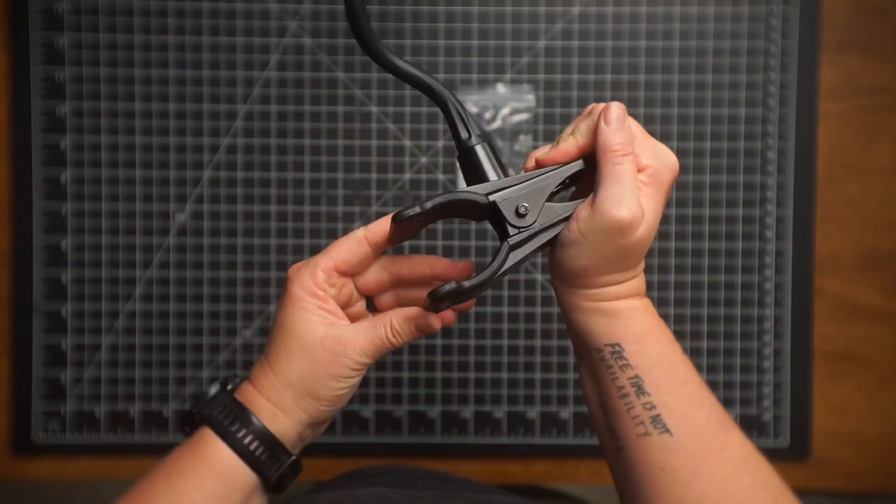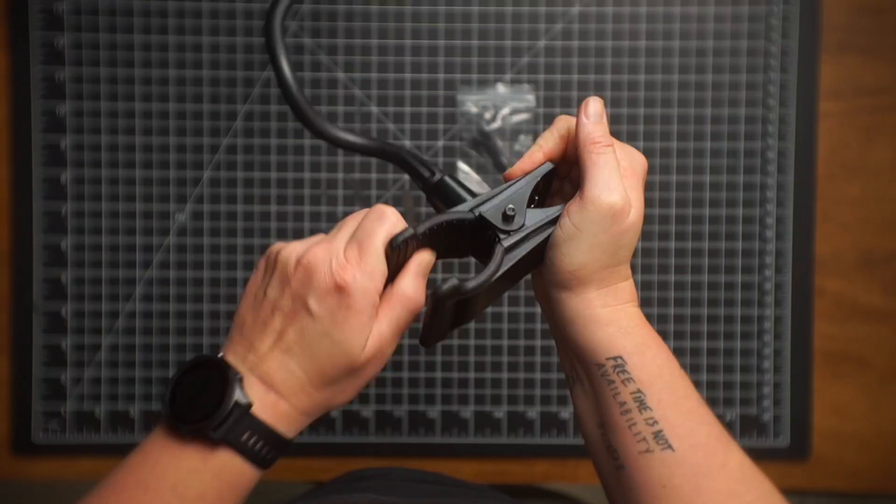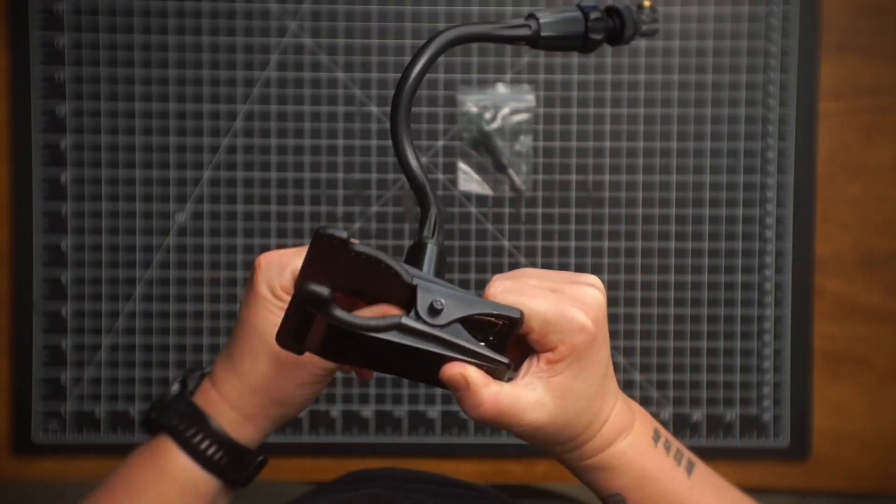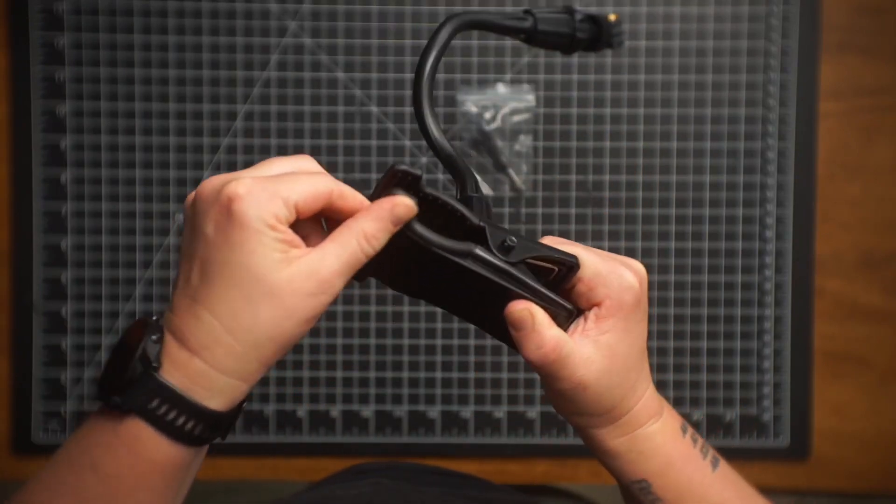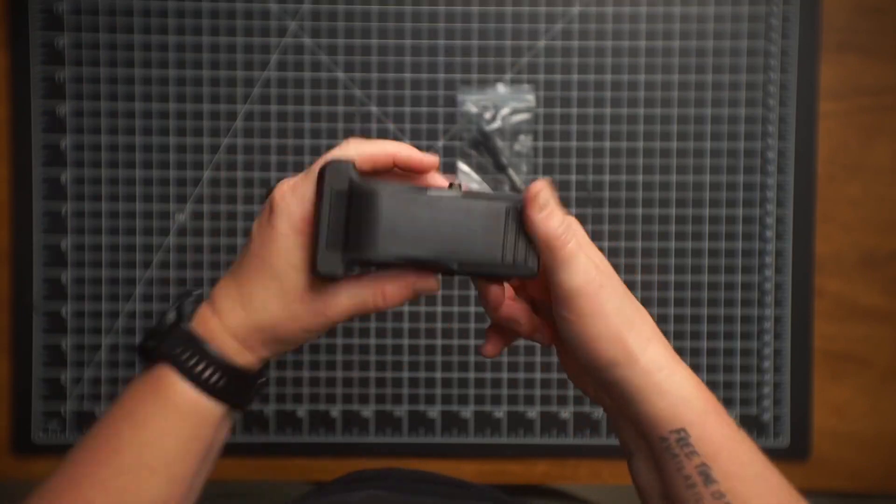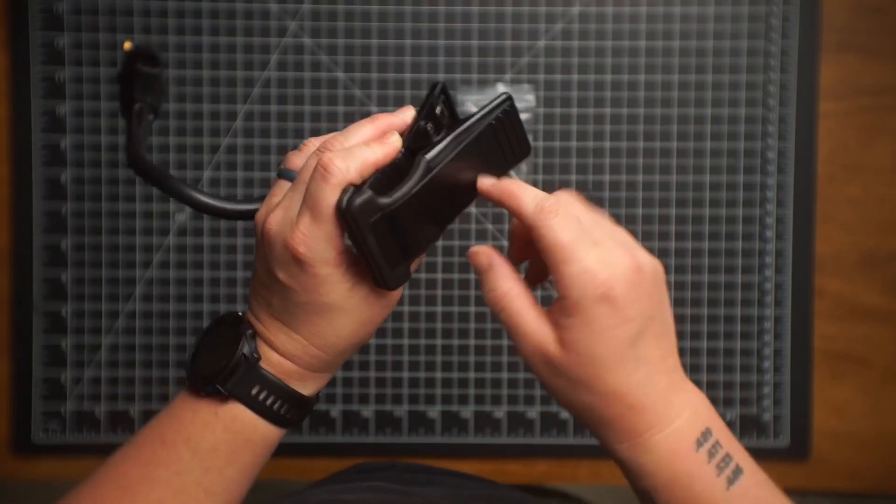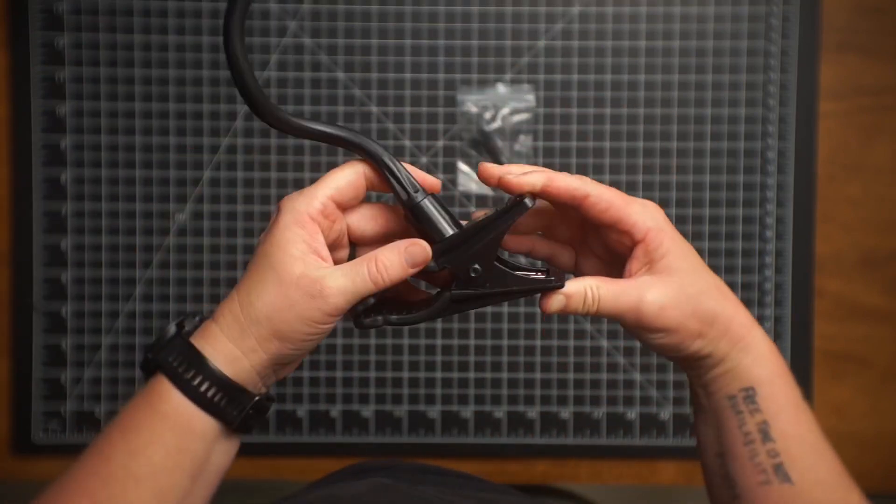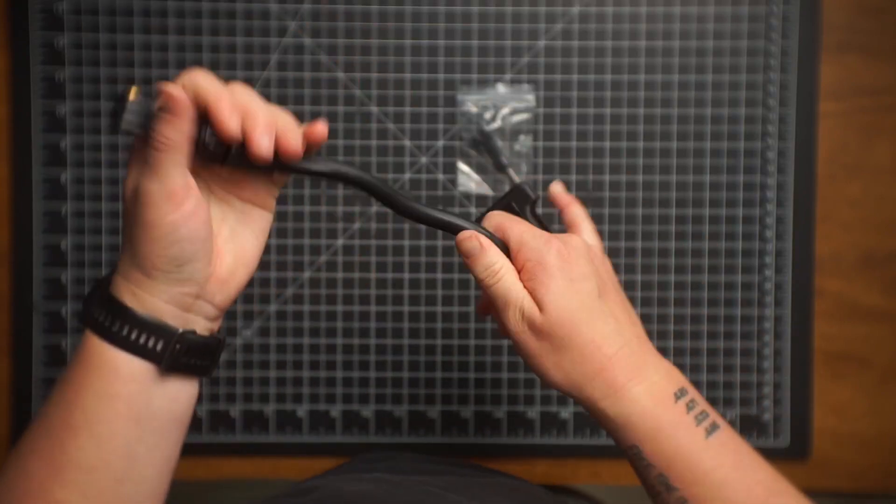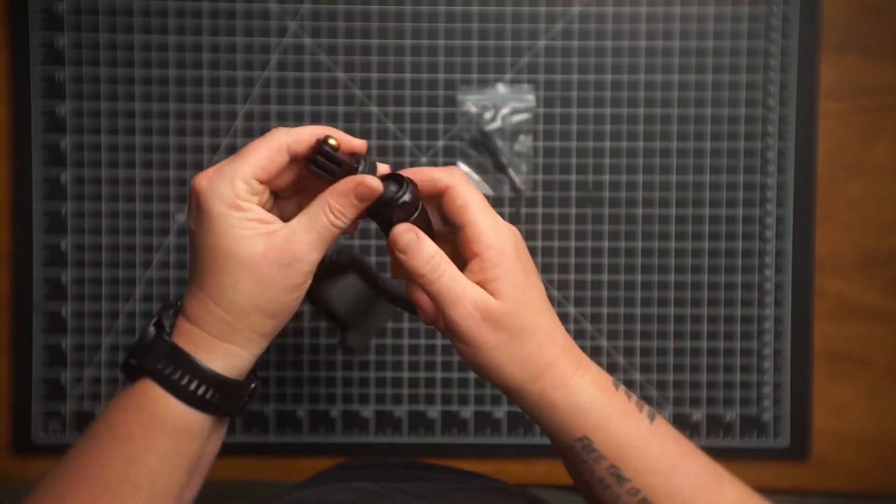And of course you have the clamp. This is all rubber texture here inside and around these edges as well. This feels like plastic. Wow, this feels really strong. I'm impressed already with that.